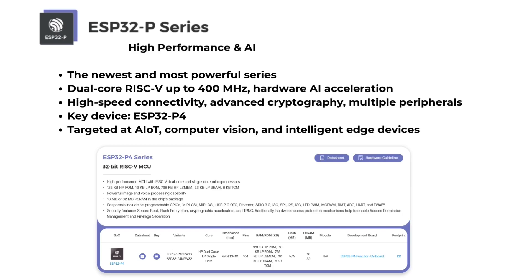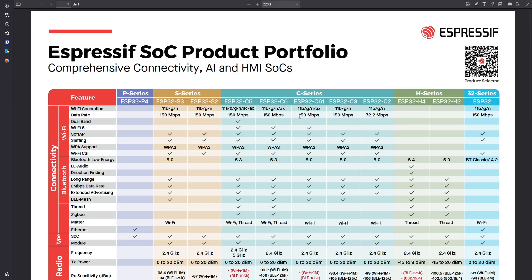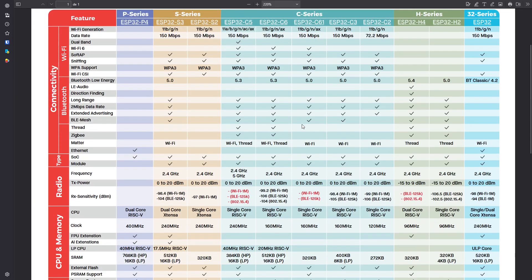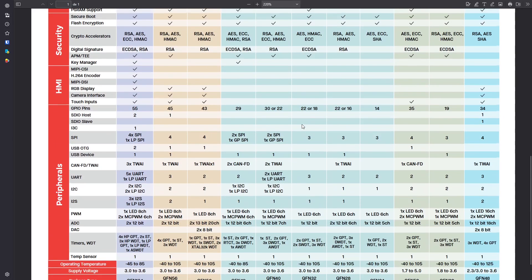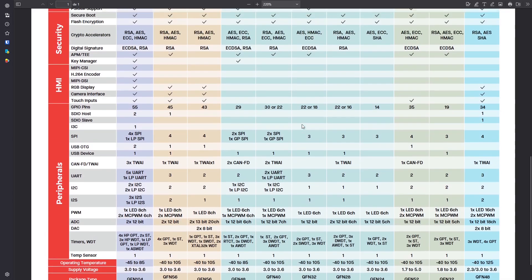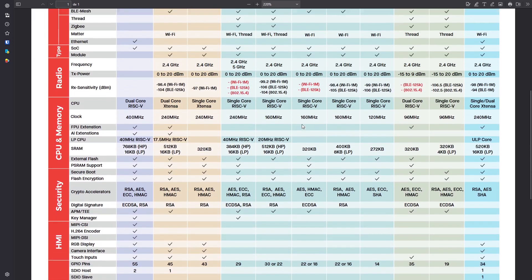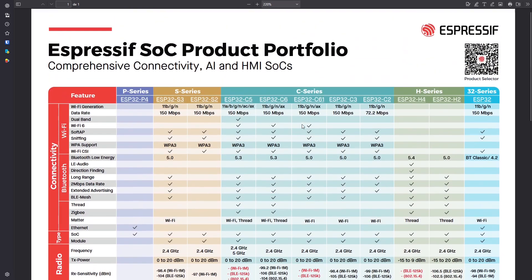The ESP32-P series is the newest and most powerful, featuring dual-core RISC-V up to 400 MHz, hardware AI acceleration, high-speed connectivity, and advanced cryptographic support. The key device is the ESP32-P4, targeted at AIoT, computer vision and intelligent edge devices. With all these options, the ESP32 family offers a scalable and flexible ecosystem allowing you to choose the right chip based on your power, performance, connectivity and security needs — from entry-level BLE nodes to AI-capable smart edge devices.